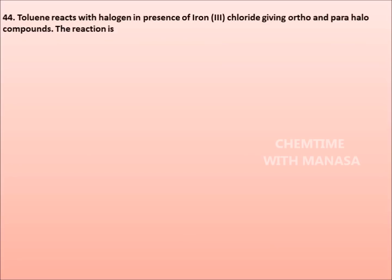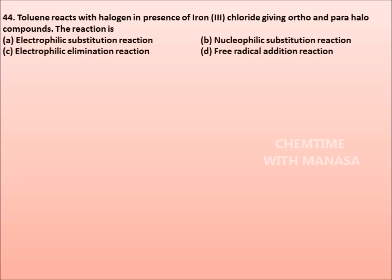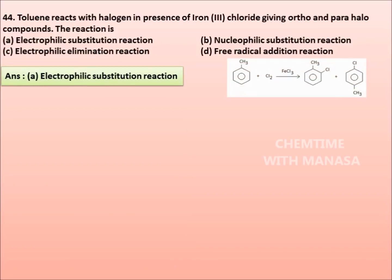Question number 44. Toluene reacts with halogen in presence of iron-3-chloride giving ortho and para halo compounds. The reaction is: electrophilic substitution reaction, nucleophilic substitution reaction, electrophilic elimination reaction, free radical addition reaction. Correct answer is option A, electrophilic substitution reaction. Toluene when reacts with Cl₂ in presence of FeCl₃, we get ortho and para product.